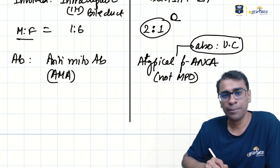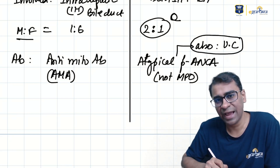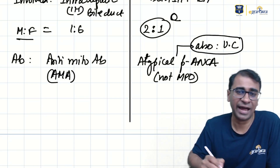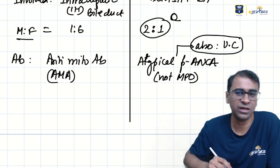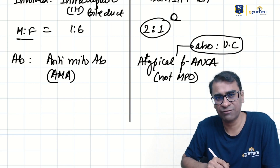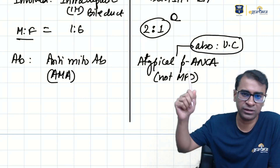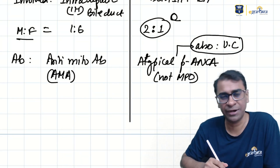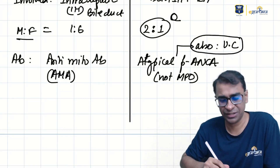Because of this shared atypical p-ANCA association, PSC has a high and significant association with ulcerative colitis in inflammatory bowel disease. We will discuss this again in the IBD topic in GIT.